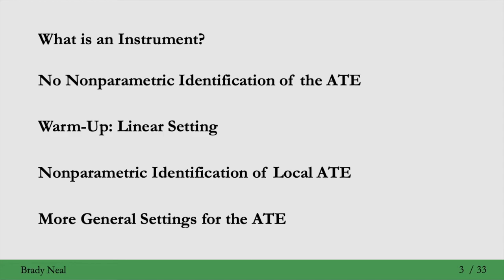Here's the outline of this lecture. We'll first define what an instrument is. Then we'll emphasize that there is no non-parametric identification of the average treatment effect with instrumental variables. Then we'll warm up with showing some identification in a simple linear setting. But because it's a linear setting, it's not super satisfying. We might want more general identification, where we don't have sort of linear parametric assumptions. So then we'll move to non-parametric identification. But it's not of the ATE. It's of a different estimate, which is called the local ATE. And then finally, I'll point you to some settings where you can get identification of the average treatment effect, where you have more flexible assumptions than the sort of linear parametric form. All right, so let's move into the first section. What is an instrument?